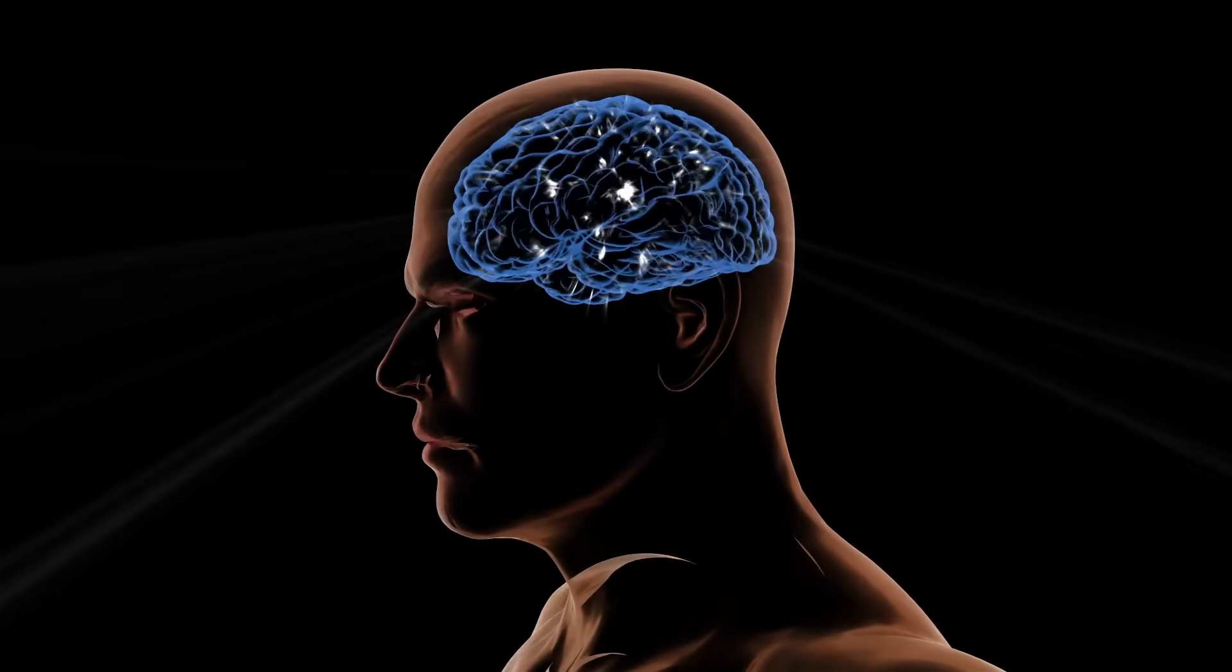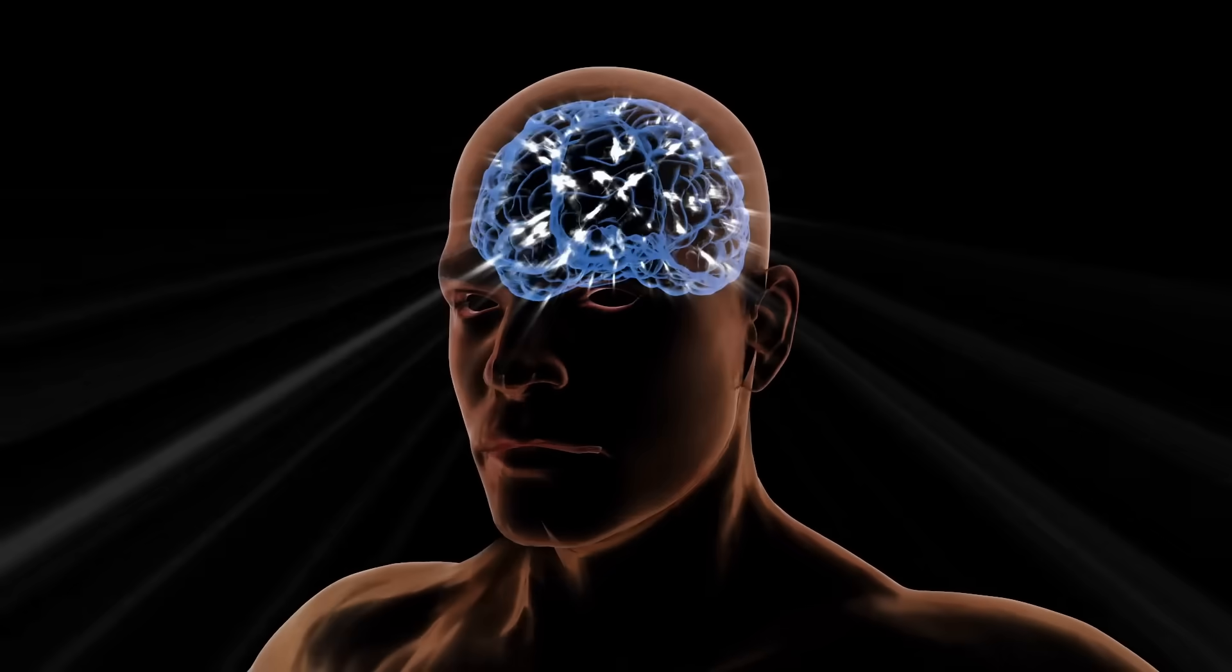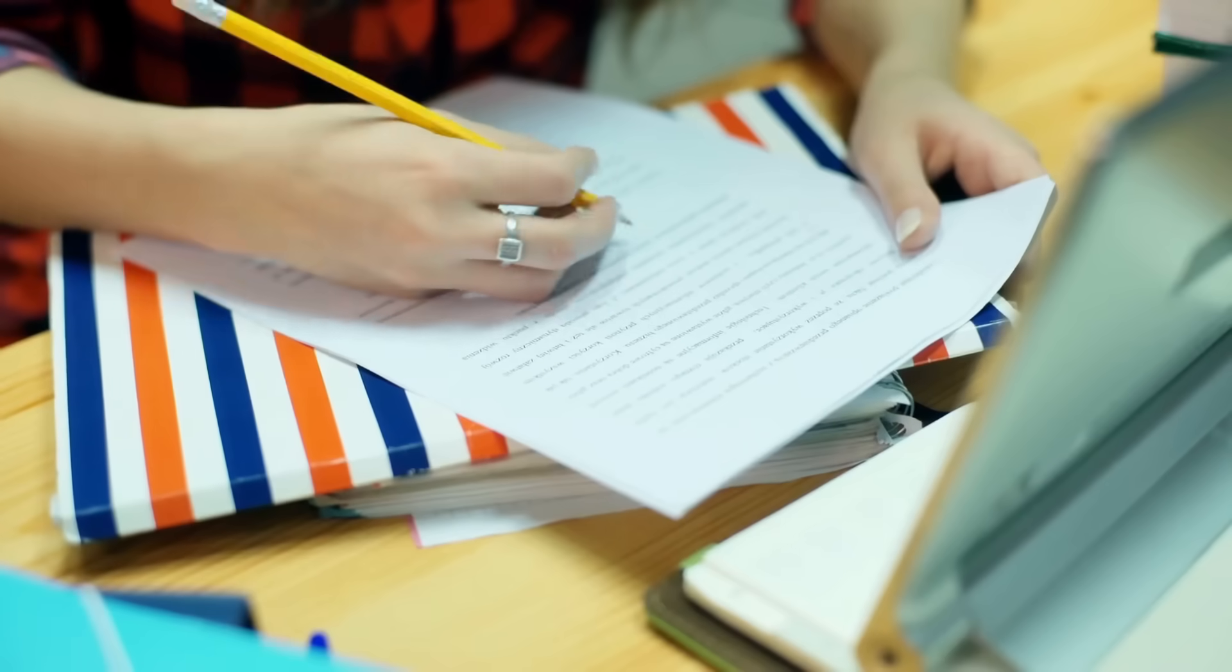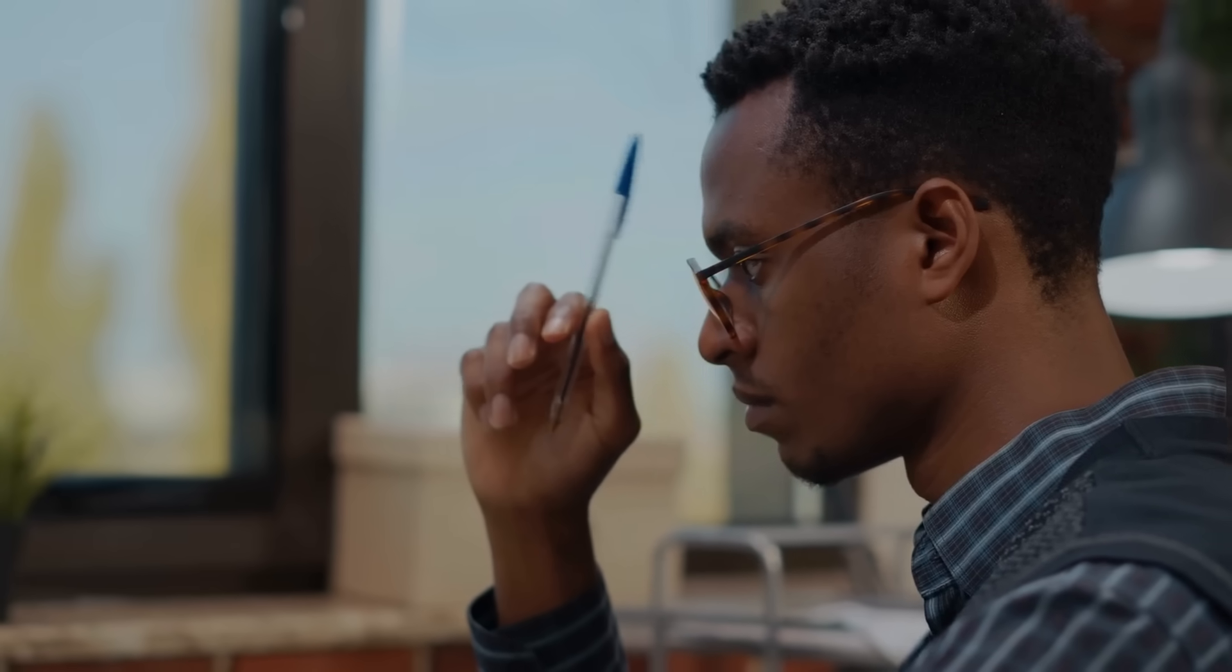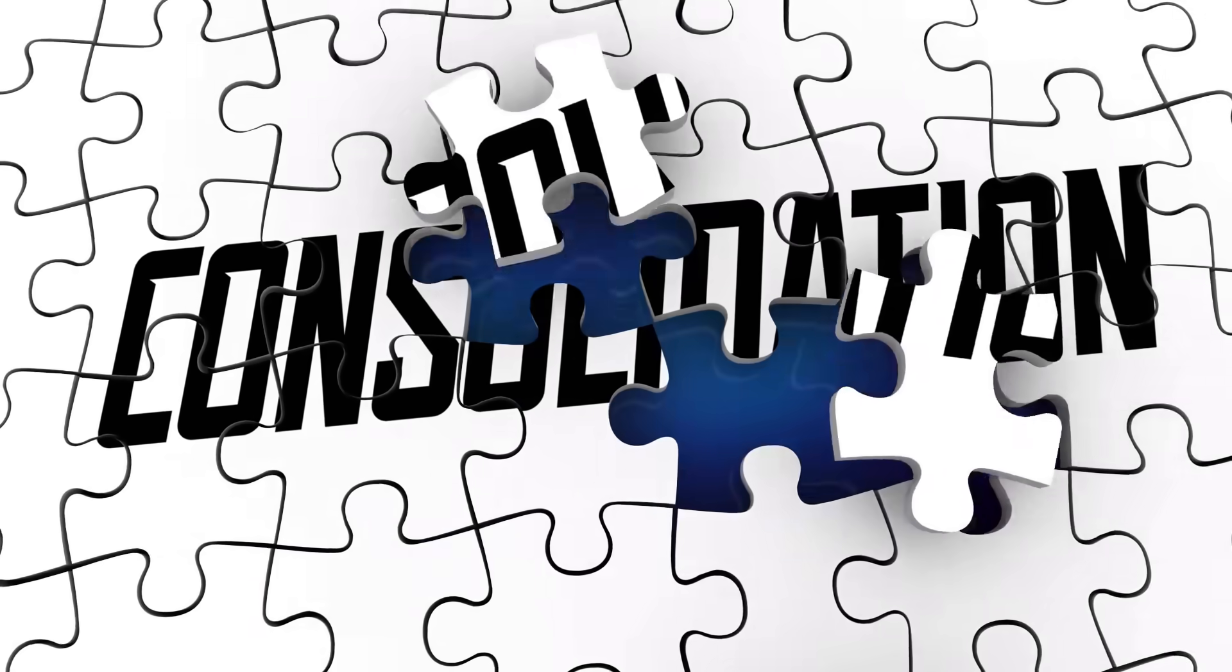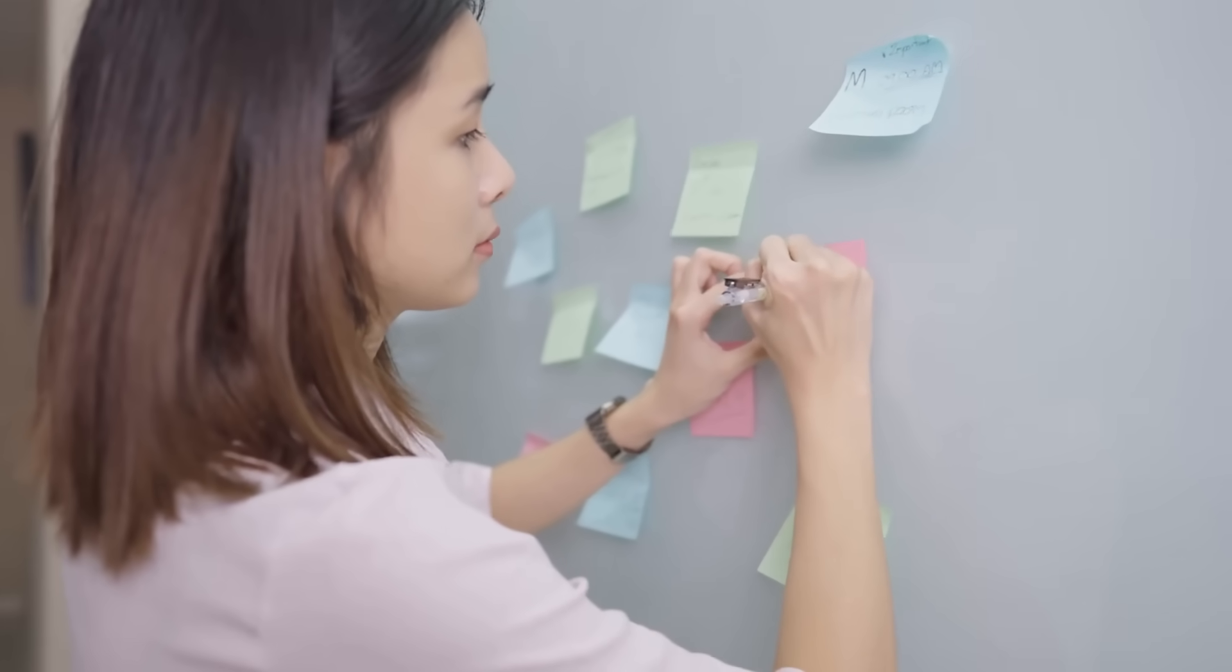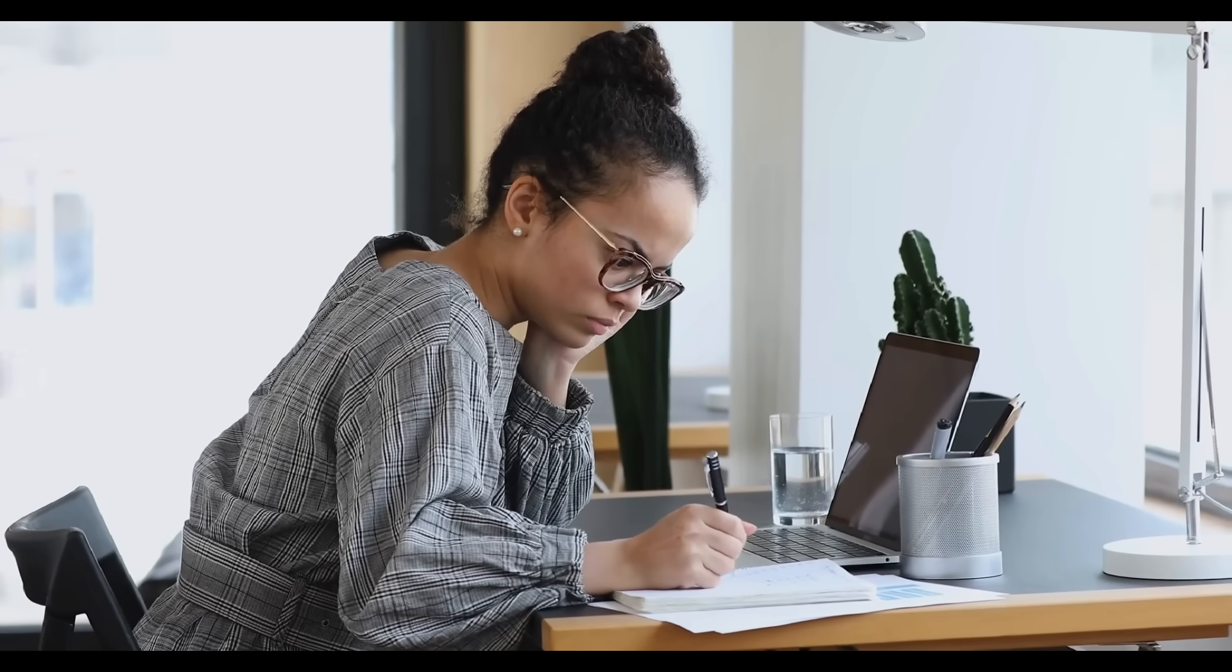But why such a dramatic difference? Because handwriting forces your brain to do three things typing completely bypasses. First, encoding. The slower speed means you can't transcribe word for word. You have to think, select what matters, and rephrase. You're processing, not recording. Second, consolidation. The hand-eye-brain coordination creates multiple memory pathways. You remember the visual layout of the page, the motor sensation of writing, the spatial location of where you wrote something.